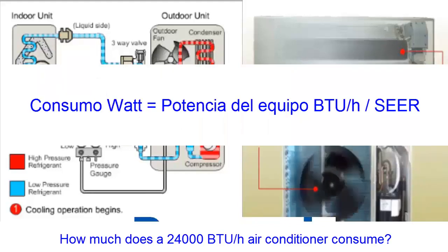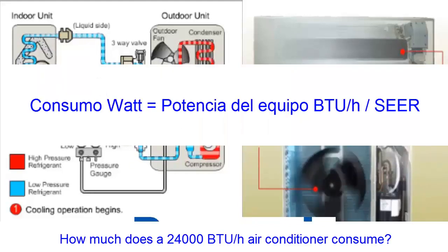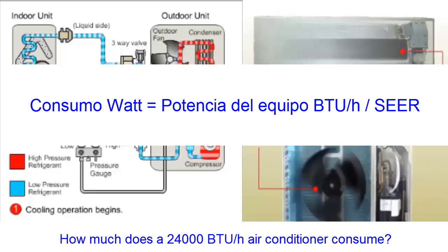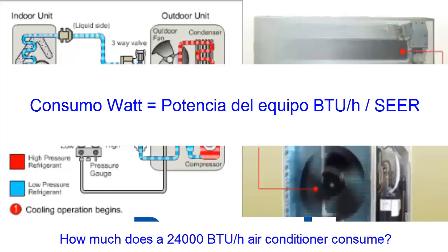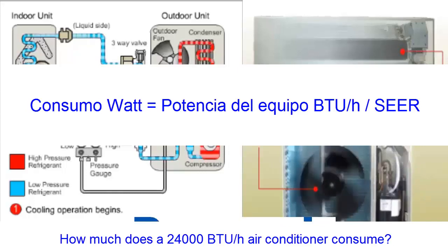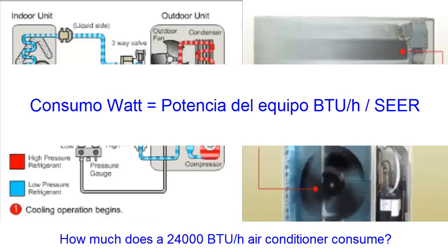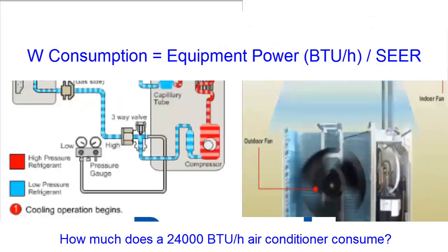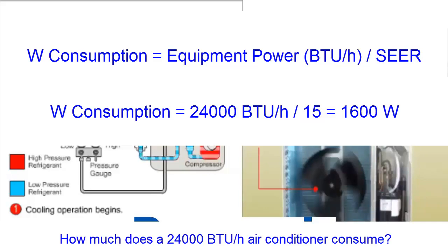The equipment's power in BTU per hour is divided by the SEER value to obtain the average power in watts that the equipment consumes. With the identified electrical power, you can consult the current consumption value in the amperage tables based on the voltage and phase, whether it is single phase or three phase.